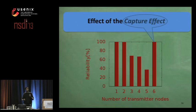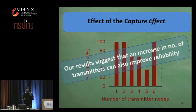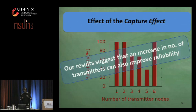This behavior is because of the capture effect, as the sixth node was located only two meters away and in the line of sight of the receiver. Our results suggest that an increase in the number of transmitters — high transmission density — does not always decrease reception reliability; it can also contribute to improved performance.